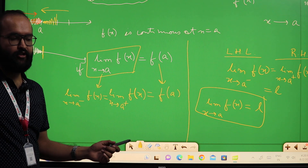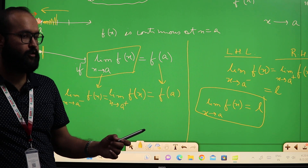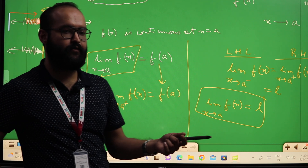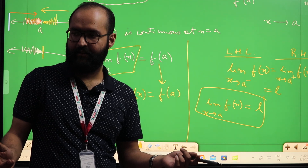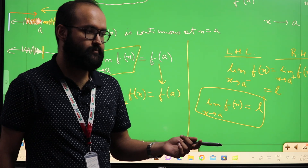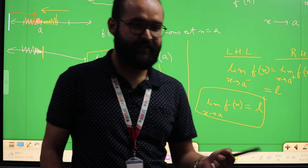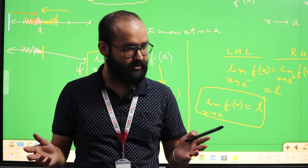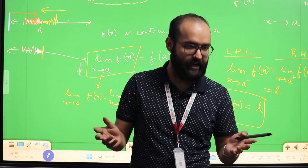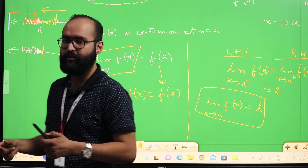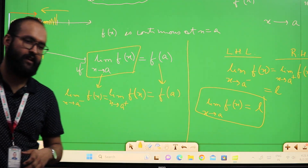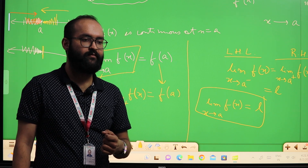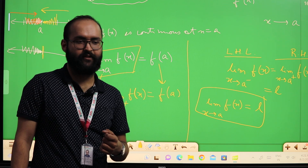So when is f(x) said to be continuous at any point x equal to A? When the limit of f(x) at x equal to A equals f(A). Or in expanded form: when the left-hand limit equals the right-hand limit, and both equal the value of the function at A — then we say the function is continuous at x equal to A.